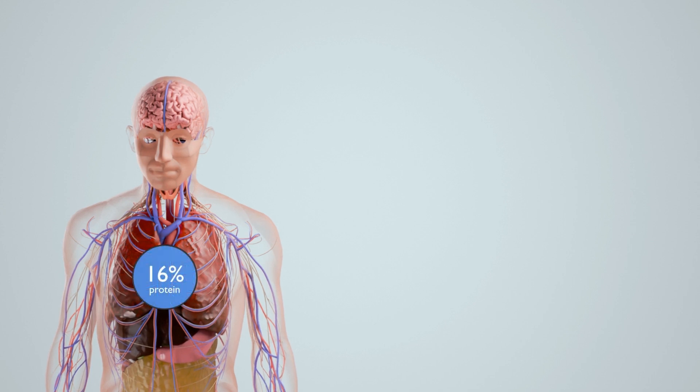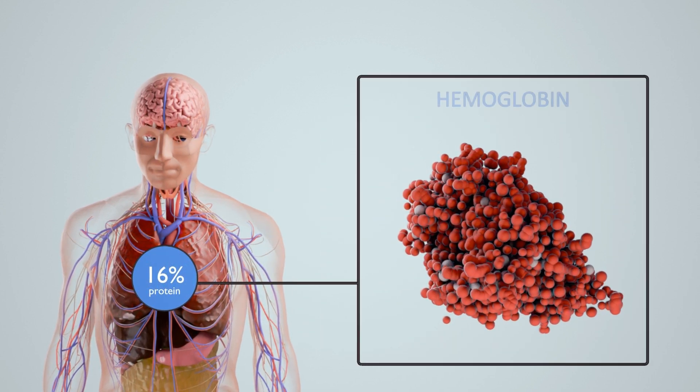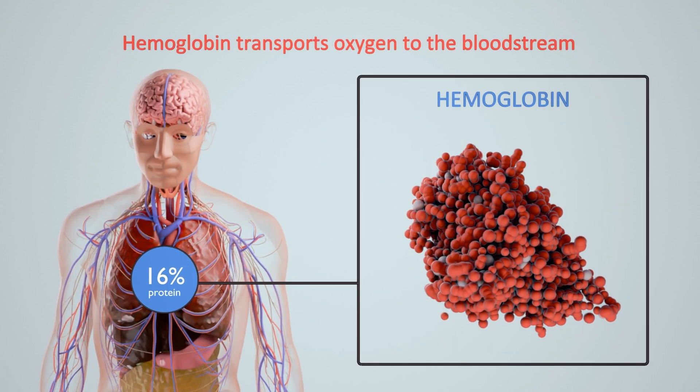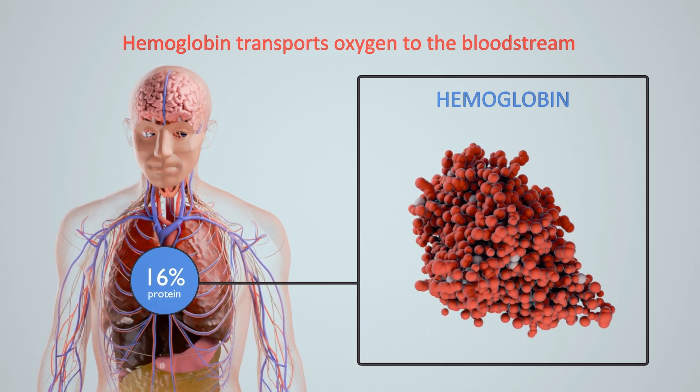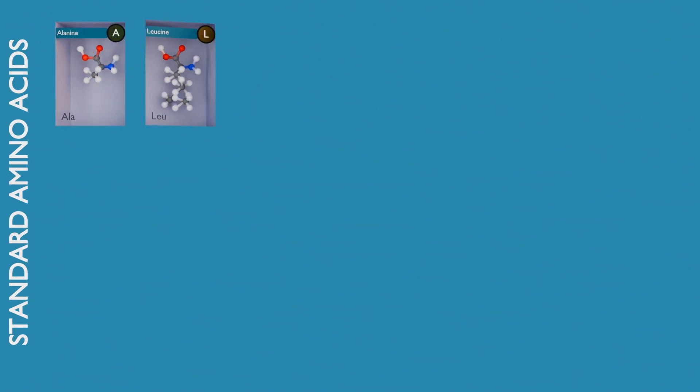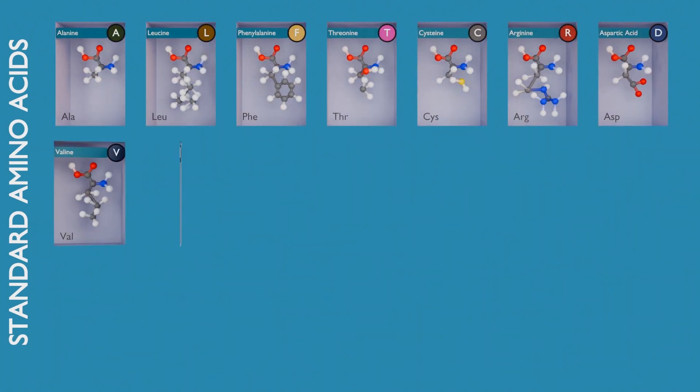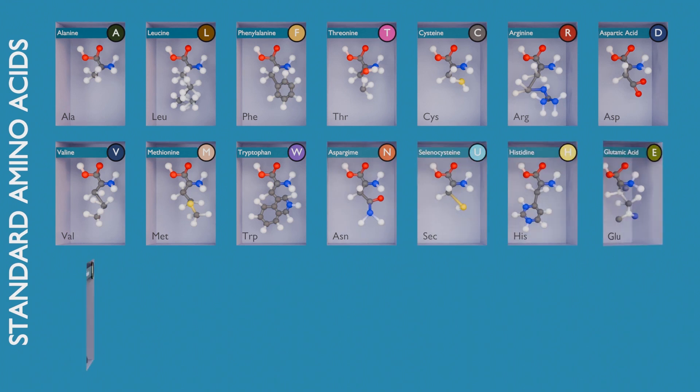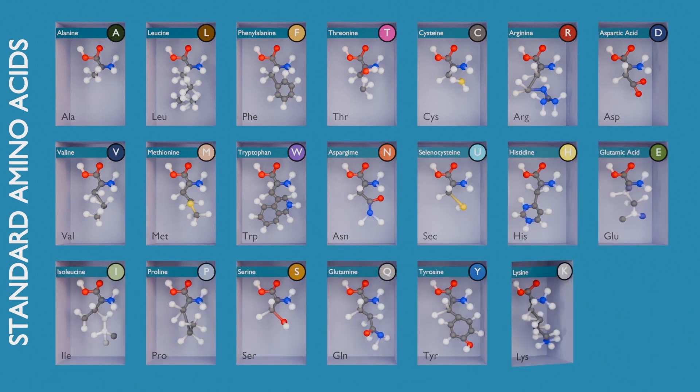Proteins play countless roles throughout the biological world. Some transport nutrients throughout the body. Some help chemical reactions to happen at faster rates. Others build the structures that make up living things. Despite this wide range of functions, all proteins are made out of the same 21 building blocks, called amino acids.